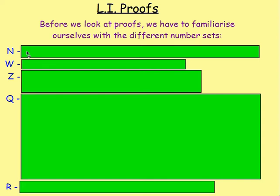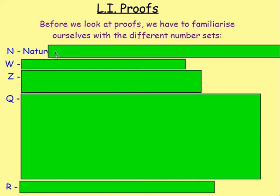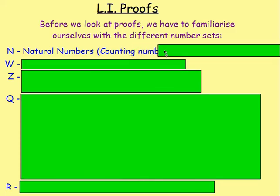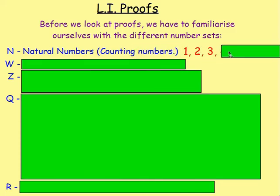What is N? What number set is that? That is your natural numbers, and your natural numbers are just your counting numbers starting with 1. So 1, 2, 3, 4, 5, and so on.